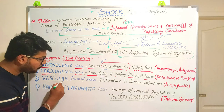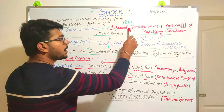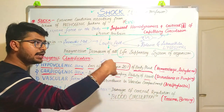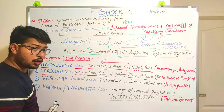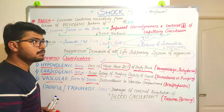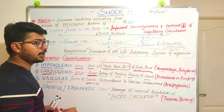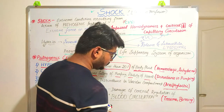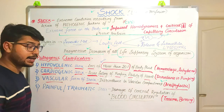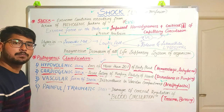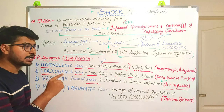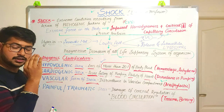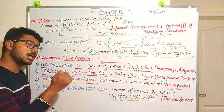Next comes the vascular form of shock. Since shock involves impaired hemodynamics and critical decrease in capillary circulation, if there is any damage in the vessels or vascular forms, it will also lead to shock. In vascular form shock, there is disturbance in some vascular component — for example, in anaphylactic shock, which is a fast hypersensitive reaction where certain biochemicals are released inside the vessels, leading to vasodilation and further changes surrounding the vessels.